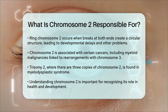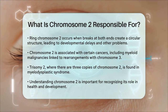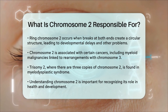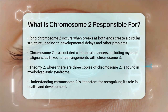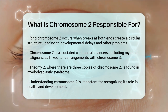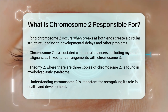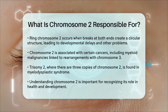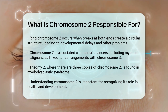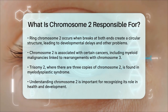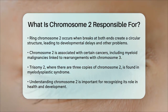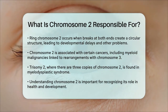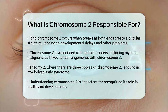In summary, chromosome 2 plays a vital role in encoding proteins essential for various bodily functions, and any changes or abnormalities in this chromosome can lead to a range of health conditions and developmental issues. Understanding chromosome 2 helps us appreciate the complexity and importance of our genetic makeup.